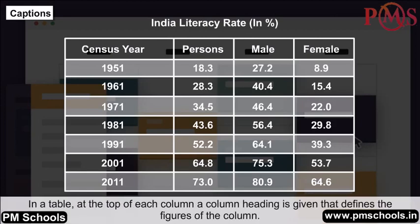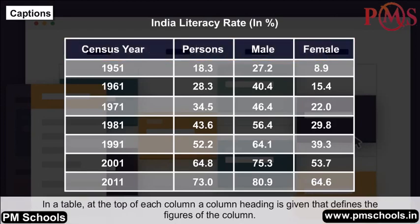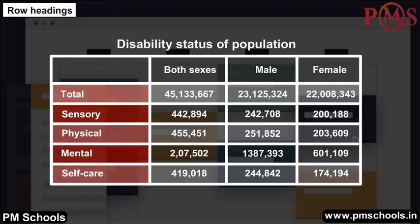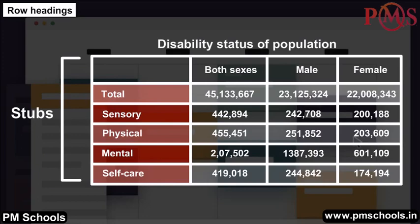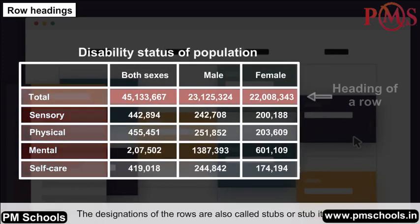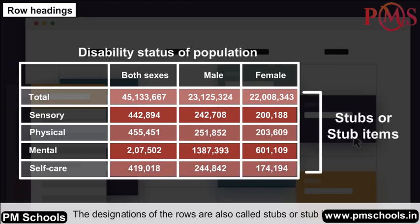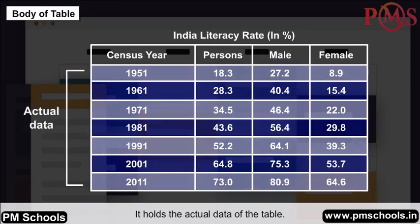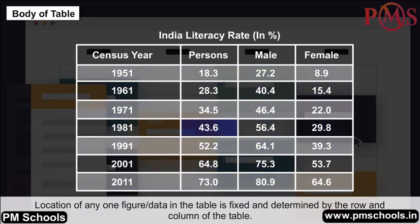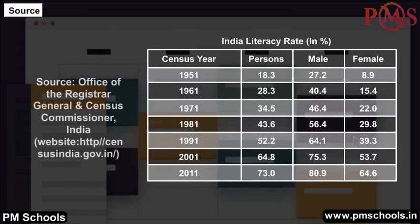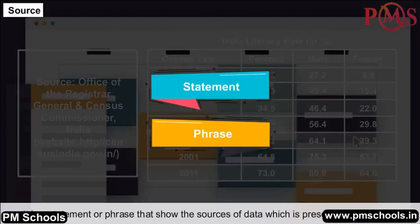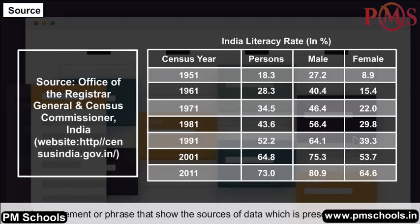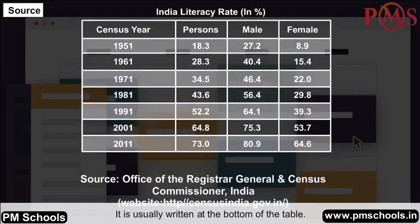Captions, Row Headings, Body, and Source: In a table, at the top of each column, a column heading (caption) is given that defines the figures of the column. Row headings, also called stubs, are the headings of rows. The body of the table holds the actual data, with location of any figure fixed by its row and column. The source is a statement showing where the data came from, usually written at the bottom of the table.